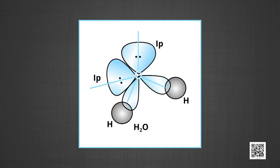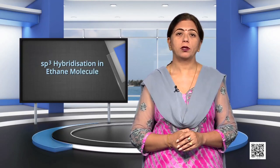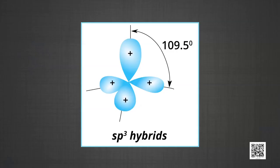Other examples of sp³ hybridization: in ethane (C₂H₆), both carbon atoms assume the sp³ hybrid state. One of the four sp³ hybrid orbitals of each carbon atom overlaps axially with the similar orbital of the other carbon to form an sp³–sp³ sigma bond, while the other three hybrid orbitals of each carbon are used in forming sp³–s sigma bonds with hydrogen atoms. The C–C sigma bond length is 154 pm and each C–H bond length is 109 pm.